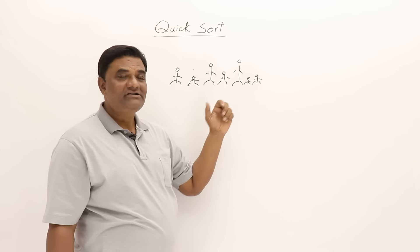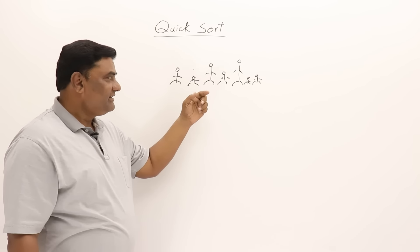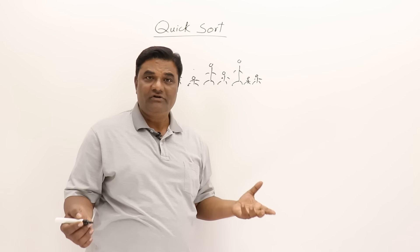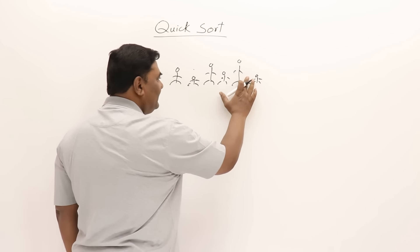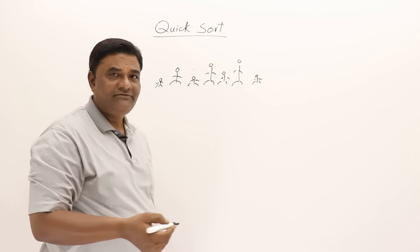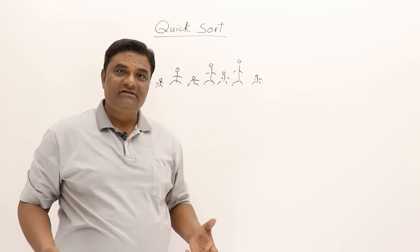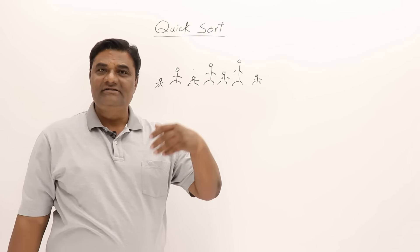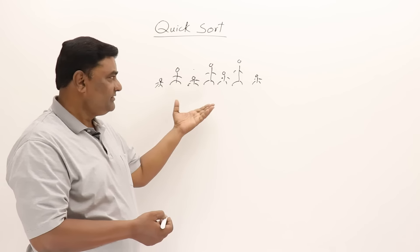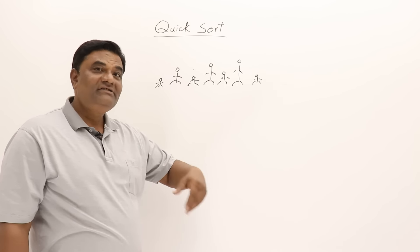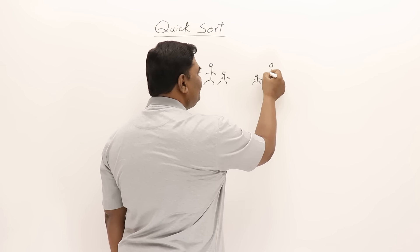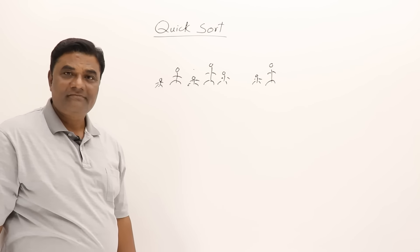If we ask the students to arrange themselves in increasing order of height, the shortest person knows their place — they will quietly come and stand at the beginning of the list. Nobody has to help them. Similarly, the tallest person in the class knows they are the tallest and will simply go and stand at the back. Nobody has to show their place.